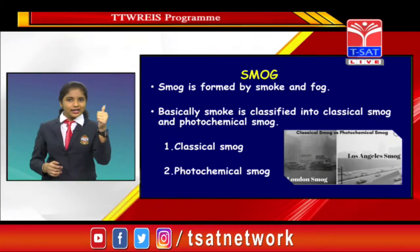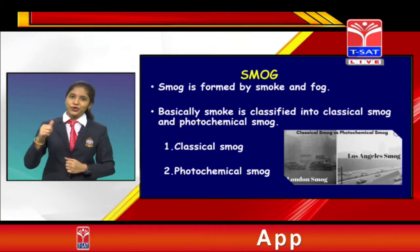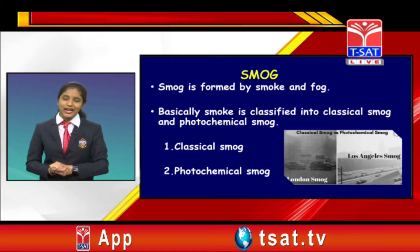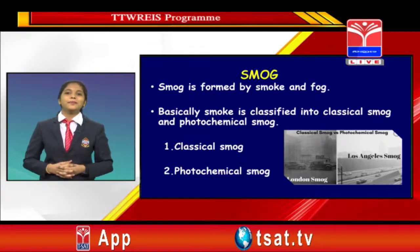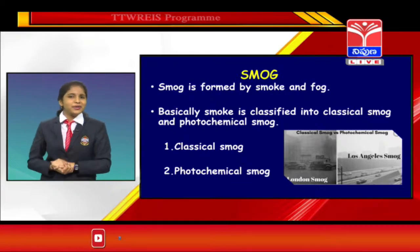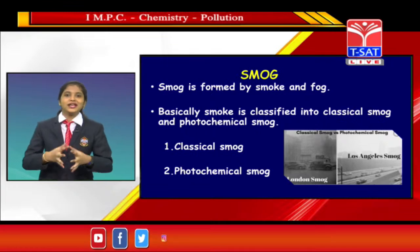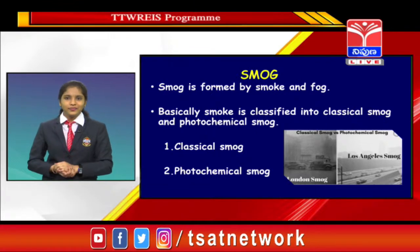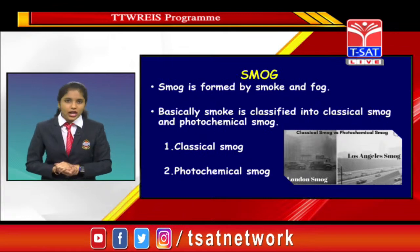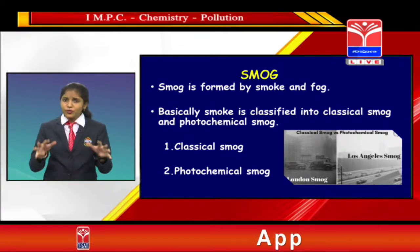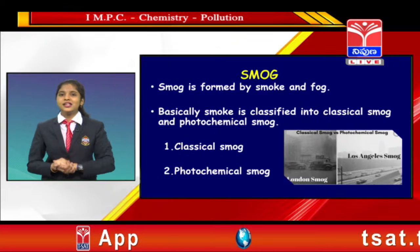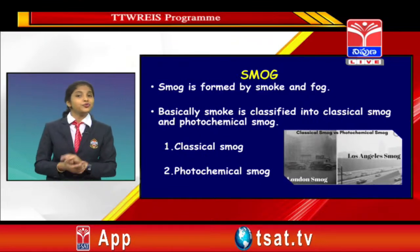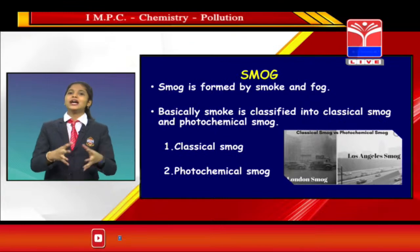Classical smog is generally observed in cool and humid climates and is also known as oxidizing smog, as it contains sulphur dioxide. In 1952, London was trapped with classical smog for about five days, which is why it is also known as London smog. Photochemical smog occurs in hot and humid climates, so it is also known as summer smog.